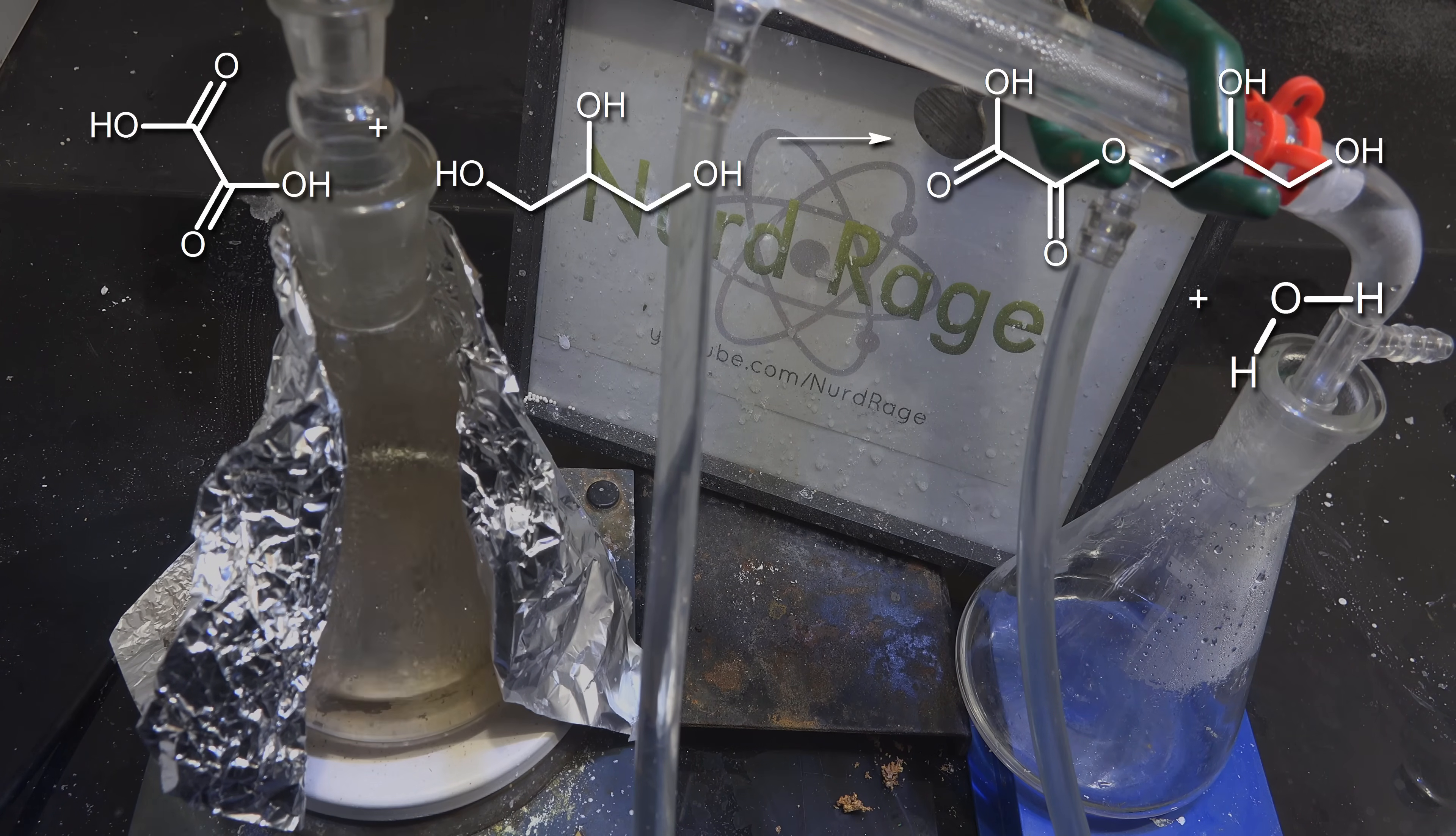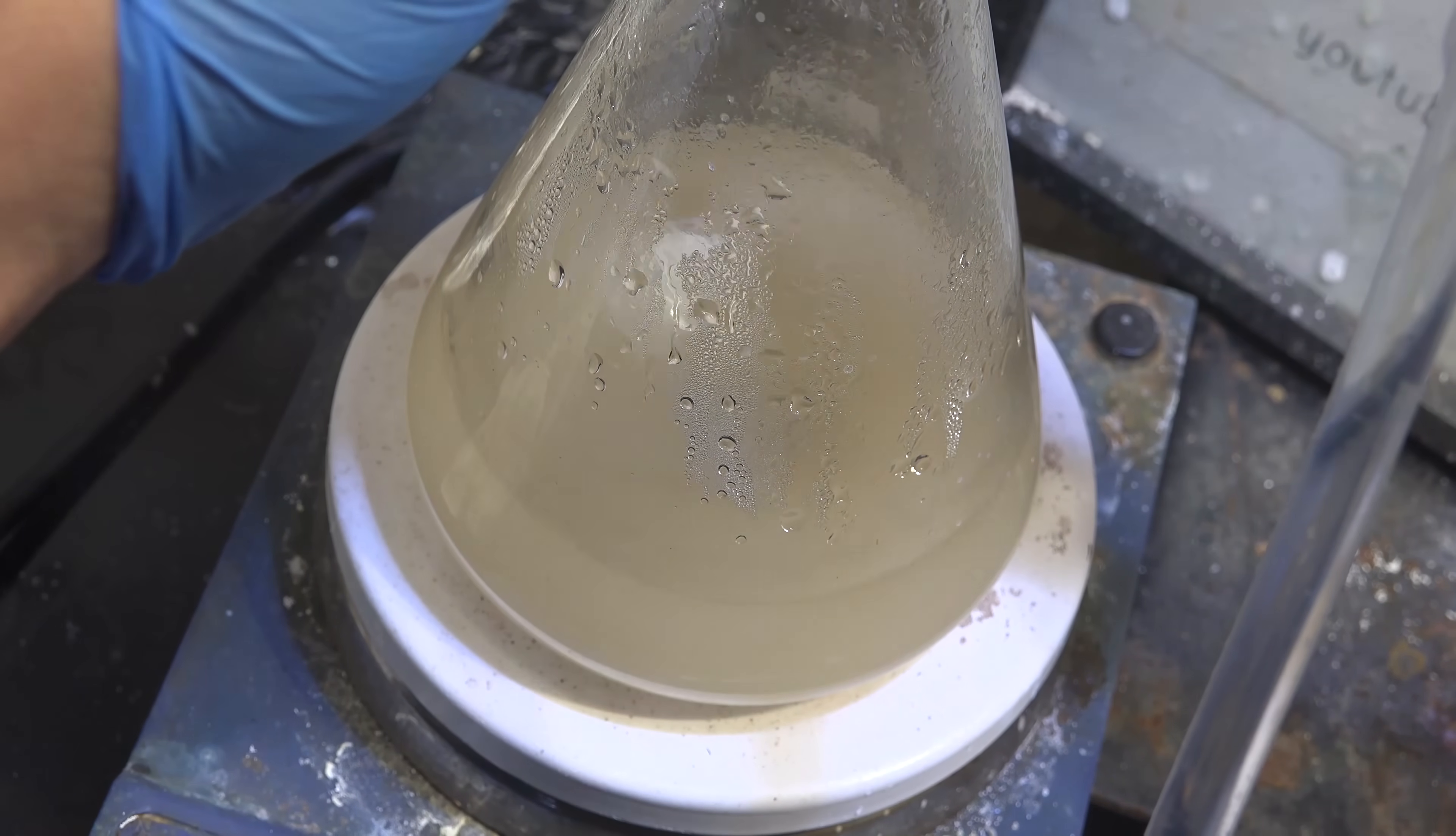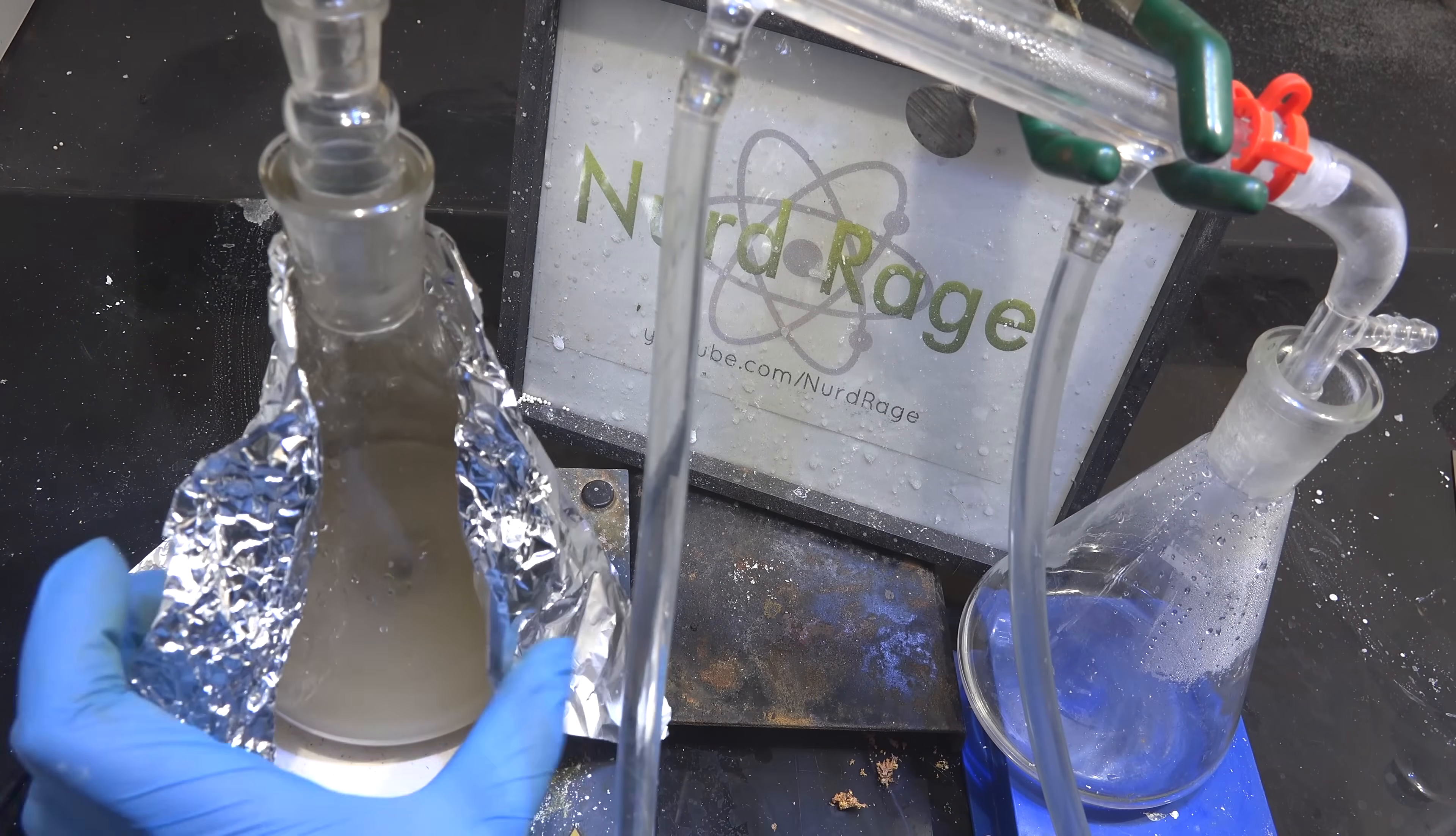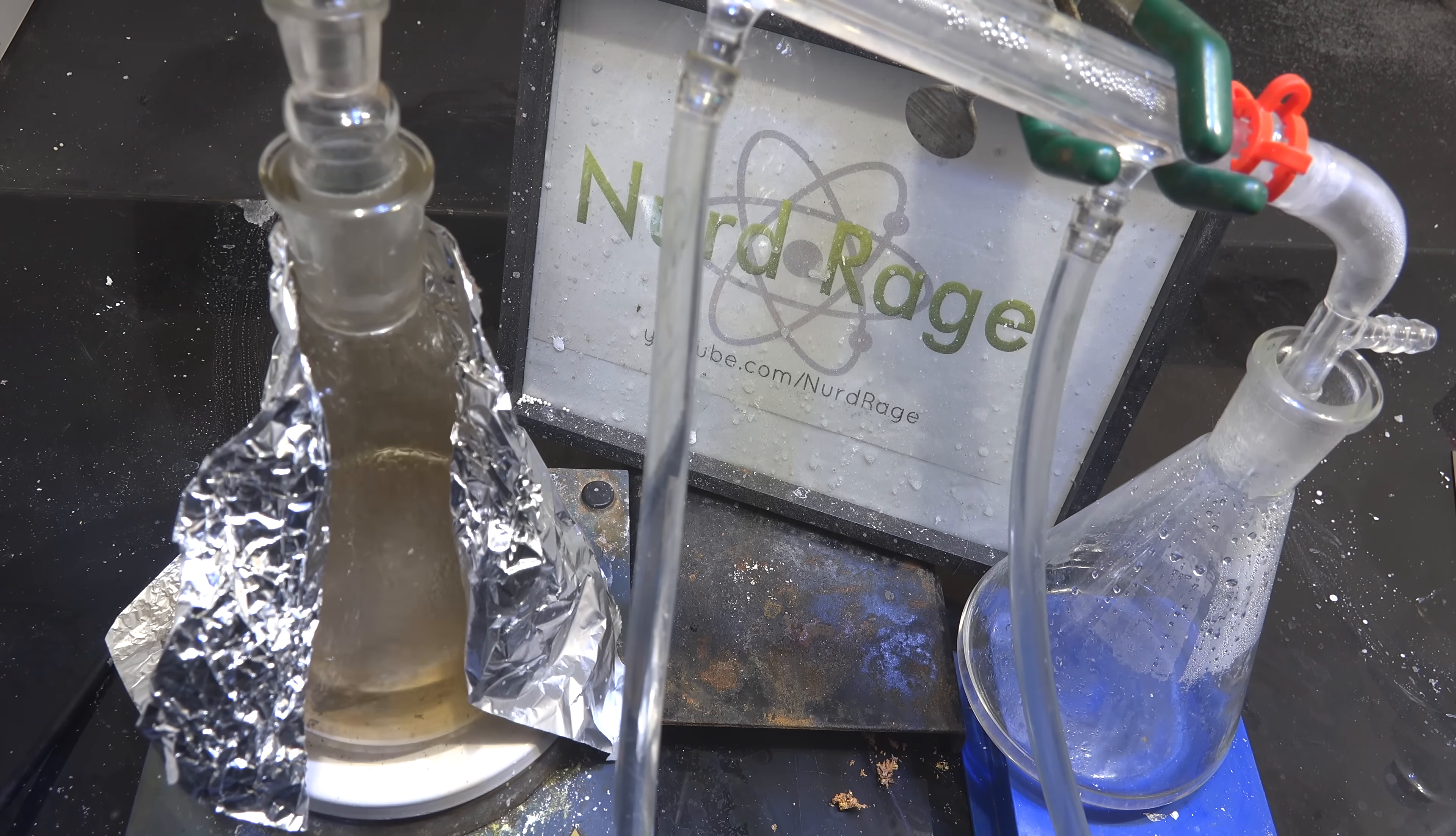The oxalic acid will go on to make more glycerol oxalate and eventually more glycerol monoformate. You can then add in more oxalic acid and repeat the cycle. We're essentially converting oxalic acid into formic acid using glycerol as our catalyst.